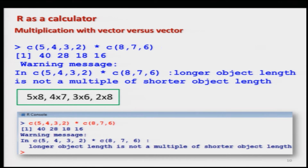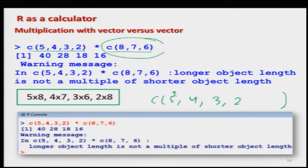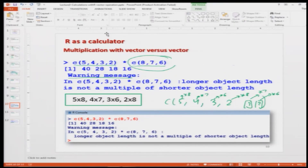If the lengths are not exact multiples — for example 4 elements in the first and 3 in the second — R again gives a warning message. Say C(5, 4, 3, 2) multiplied by C(8, 7, 6): 5×8, 4×7, 3×6, then 2×8, but 7 and 6 have no matching element in the first vector. That is why you get a warning message. This is how the multiplication operator works in R.